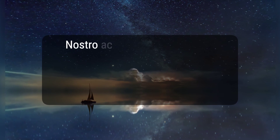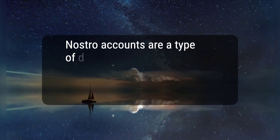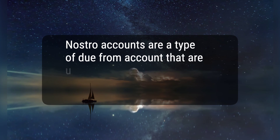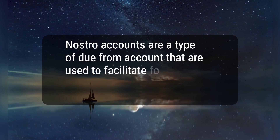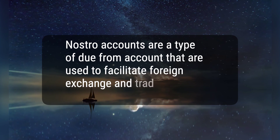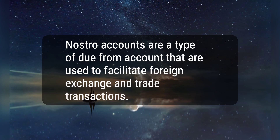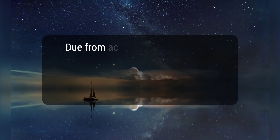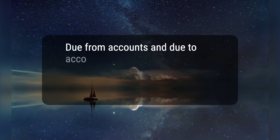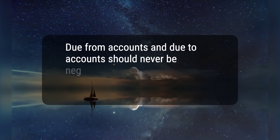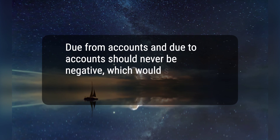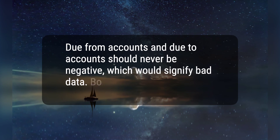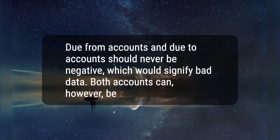Six, Nostro accounts are a type of due from account that are used to facilitate foreign exchange and trade transactions. Seven, due from accounts and due to accounts should never be negative, which would signify bad data. Both accounts can, however, be zero.